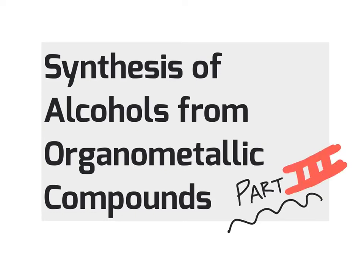In this unit, we're going to take another look at synthesizing alcohols using organometallic compounds as one of our starting materials. Those organometallic compounds include things like organolithium compounds that have a carbon-lithium bond, or Grignard reagents that have a carbon-magnesium bond. We're going to focus on reacting those organometallic compounds with molecules that have a carbonyl group bonded to a heteroatom, such as esters, which have a carbonyl group directly bonded to an oxygen and an alkyl group. Let's take a look at how that impacts the synthesis of alcohols.